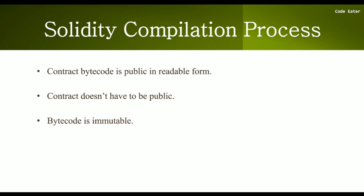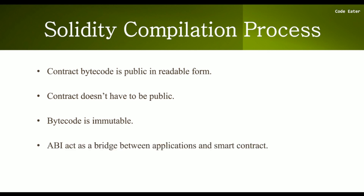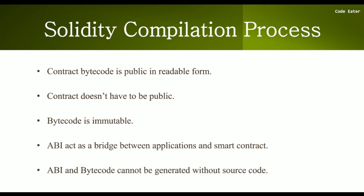Third, bytecode is immutable — since bytecode cannot be changed once deployed, this is what makes your smart contract immutable. Fourth, the ABI acts as a bridge between external applications and the smart contract, allowing them to communicate easily. Fifth, ABI and bytecode cannot be generated without the source code — you cannot reverse the process to regenerate your smart contract from ABI and bytecode alone; it is a non-reversible process.